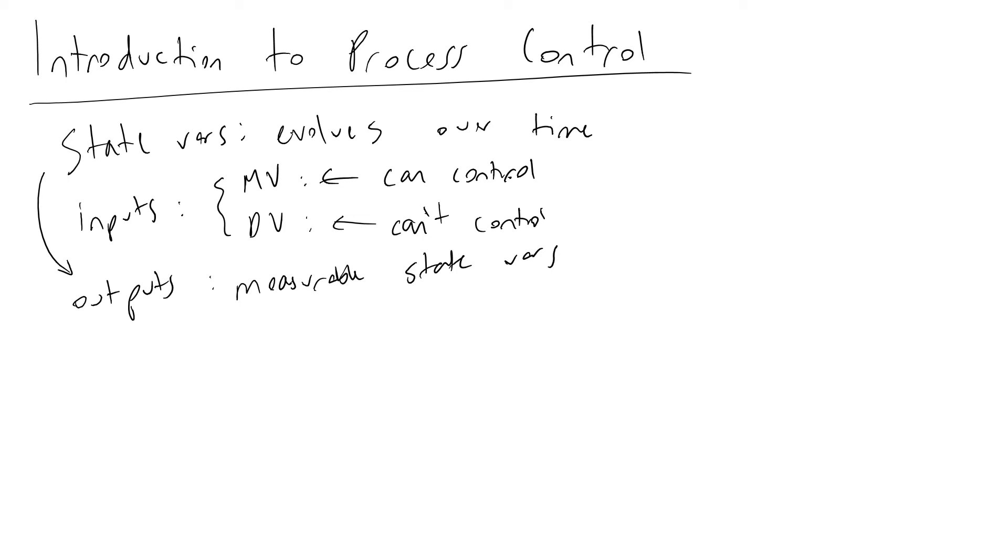Finally, we have parameters. Parameters are just constants such as specific heat capacities and densities. Generally in these systems we'll assume our species have the same heat capacity or density to keep the math simple.